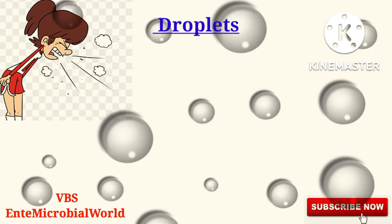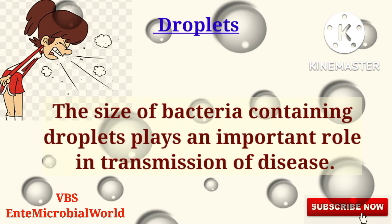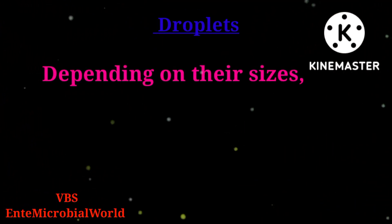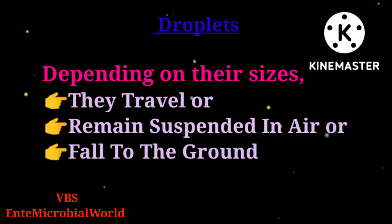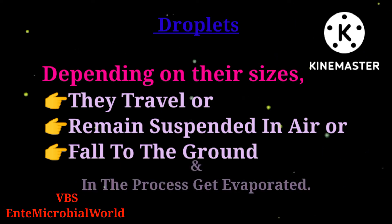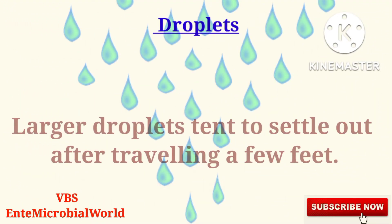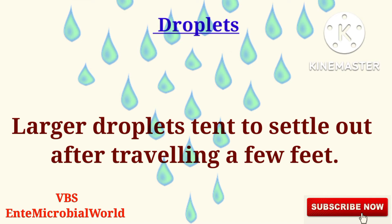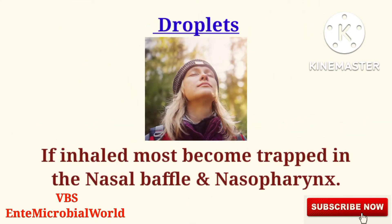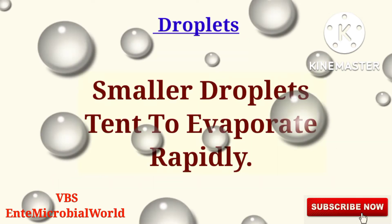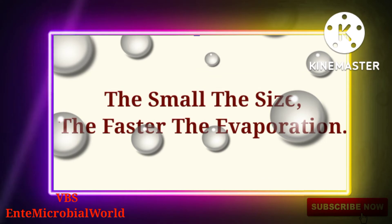One important point here is that the size of bacteria-containing droplets plays an important role in transmission of disease. Depending on their sizes, they travel or remain suspended in air, or fall to the ground and in the process get evaporated. Larger droplets tend to settle out after traveling a few feet; if inhaled, most become trapped in the nasal buffer and nasopharynx. Smaller droplets tend to evaporate rapidly — the smaller the size, the faster the evaporation.